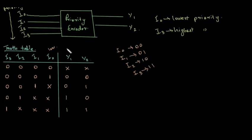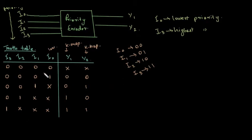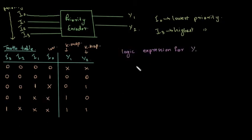Now we will create a K-map for y1 to find the logic expression, and also create a K-map for y2. We will create 4-variable K-maps with 16 cells.